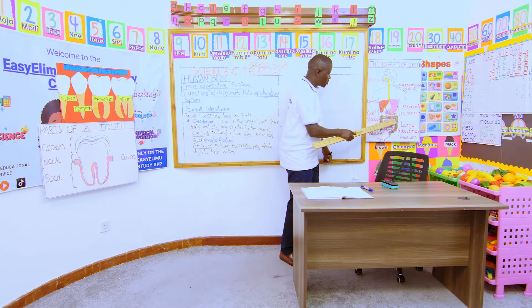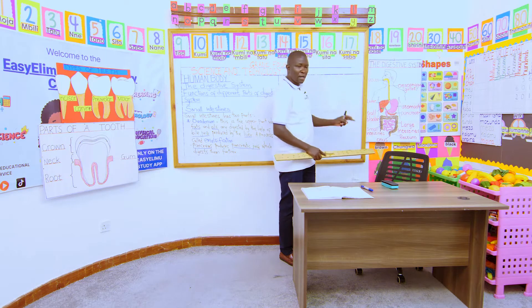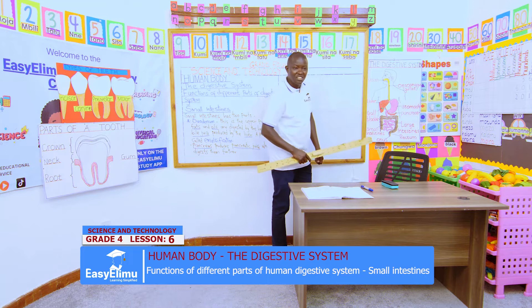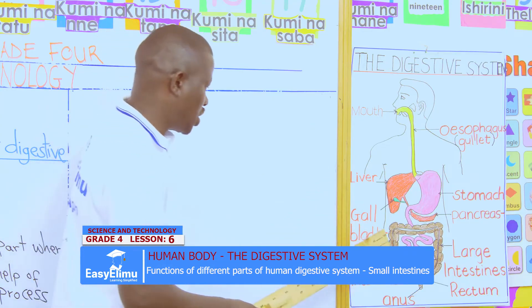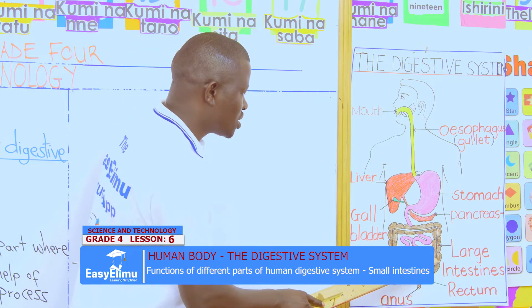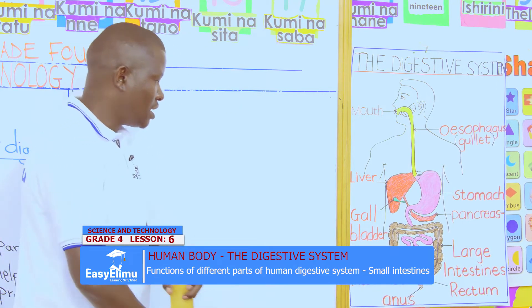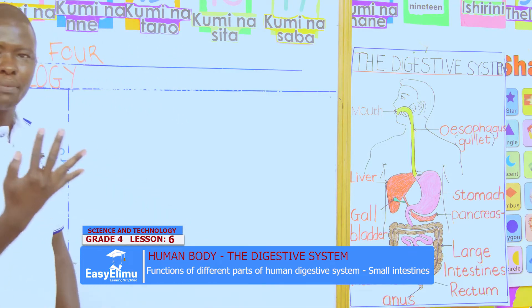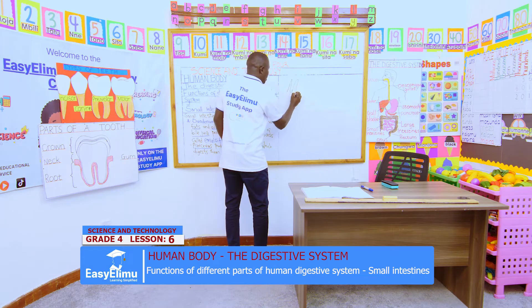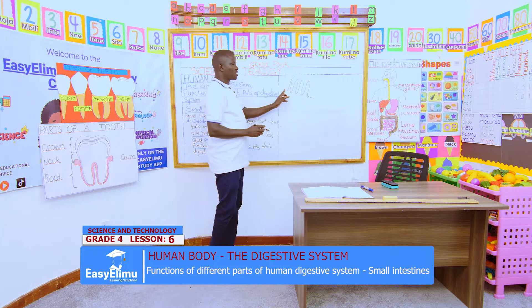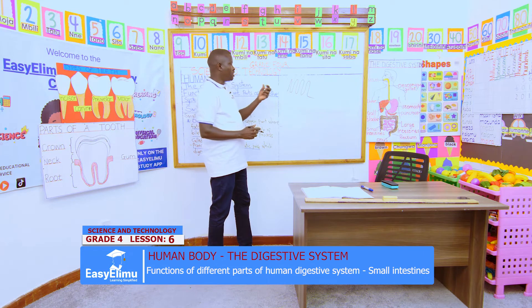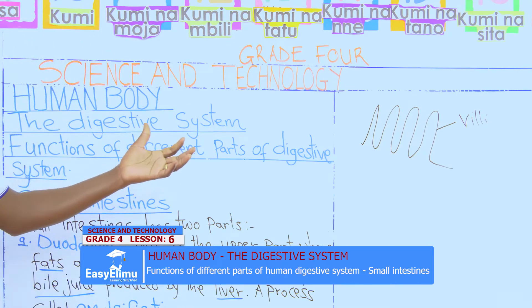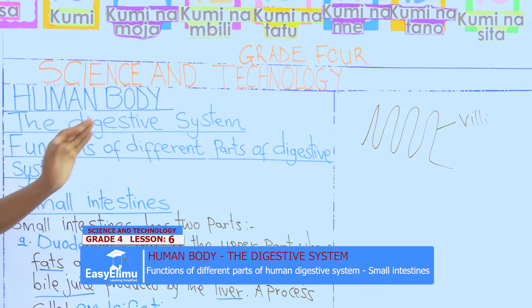Then the food goes down to the main part of the small intestines. This main part — part number two — we call it the ileum. It is the longest, up to a maximum approximation of seven meters long. Why is it long? To increase the surface area for absorption of food and further redigestion. The food goes through these coils, being redigested for easy absorption. Inside the small intestines we have finger-like projections called villi. Their work is to absorb the digested food. And digestion of food ends at the small intestine.